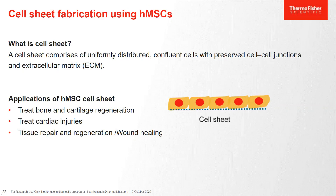So let's understand what a cell sheet is. A cell sheet comprises uniformly distributed confluent cells with preserved cell-to-cell junctions and ECM proteins. Researchers are using cell sheets for various purposes. For mesenchymal stromal cells in particular, the sheets formed using these cells have been used for bone and cartilage regeneration. There are multiple studies in different animal models where they have been used for cardiac injuries. And there are multiple research papers on the application of hMSC sheets for tissue repair, regeneration, and wound healing.